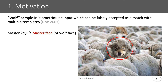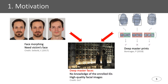For facial images, there is work on face morphing, in which two or more faces are merged together to form the morph face, and the morph face can match with all its input faces. The weakness is that you need to know the identity of the victim in order to create a morph face. For fingerprints, there is work on deep master fingerprint, in which the authors generate fingerprints which can match with multiple templates without knowledge of the enrolled IDs. So the research question in this work is about the existence of a deep master face with the same properties as the deep master fingerprint, so that we do not need knowledge of the enrolled IDs of the face recognition system to attack them.